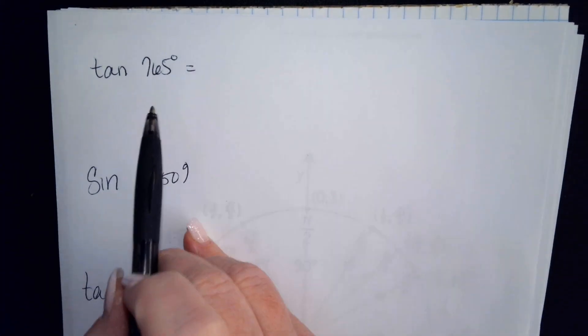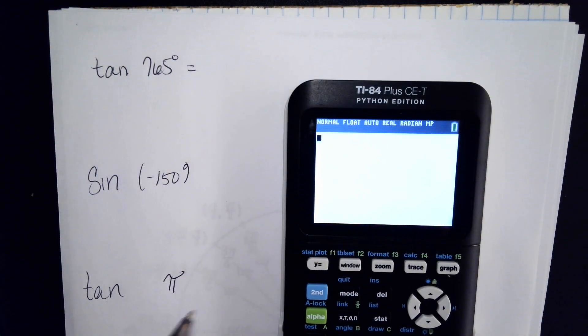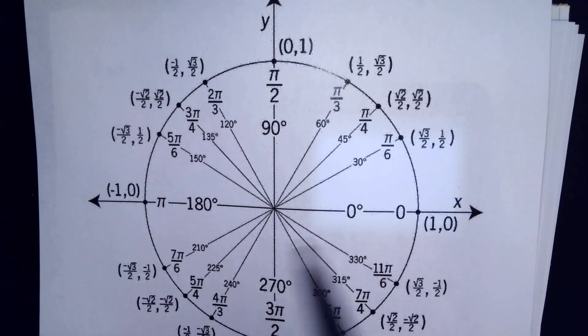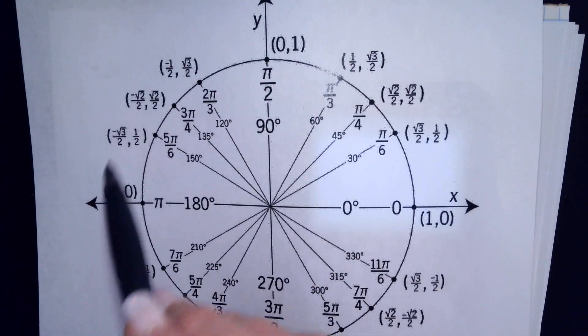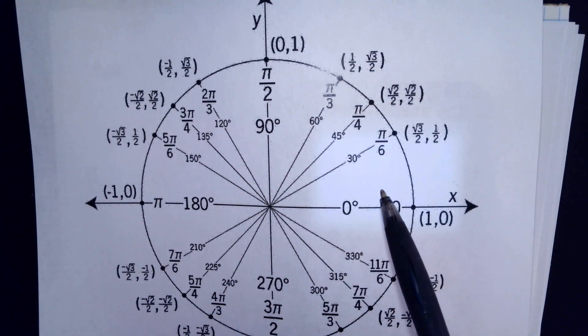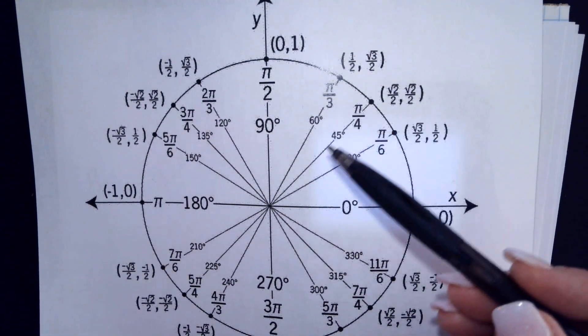So when I'm looking for the tangent of 765 degrees, what I want to know is where am I going to land on here? I'm going to go around 360 degrees, probably going around another 360, and then how much further do I need to go?